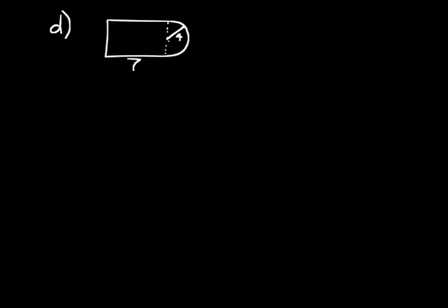Let's do a couple more practice problems — these will be a little more complicated, requiring us to break shapes into familiar parts. The first looks like a basketball key: a rectangular shape with a half circle on one end. We'll use units of meters. The bottom length is 7 meters, and since the angles are right angles, the top is also 7 meters.